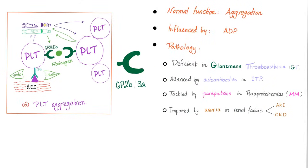GP2B3A is very important. Its normal function is platelet aggregation, influenced by ADP. There are four pathologies involving this receptor: it can be deficient in Glanzmann thrombasthenia; attacked by IgG antibodies in immune thrombocytopenia (today's topic); inhibited by paraproteins in paraproteinemia such as multiple myeloma; or impaired by uremia in cases of renal failure, whether acute or chronic — though more commonly chronic.